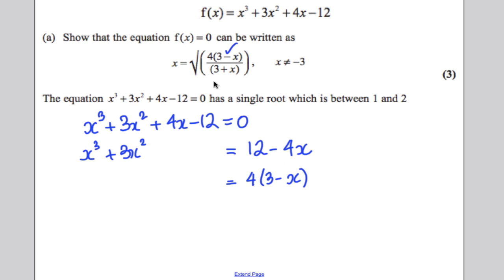Now I need to divide by 3 plus x. Well, how could I do that? Well, if I factorize out an x squared, I would get the following. And so if I divide both sides by this, I have 4(3 subtract x). And I could write x plus 3 as 3 plus x the way they want it as follows.